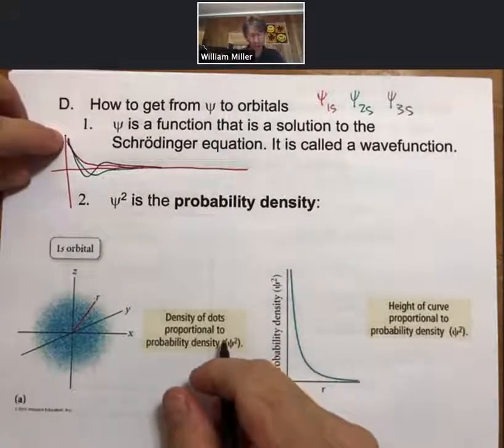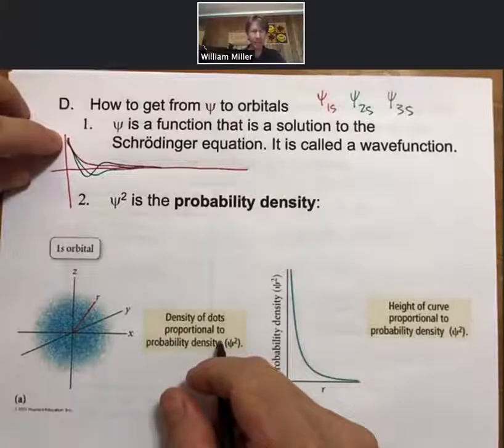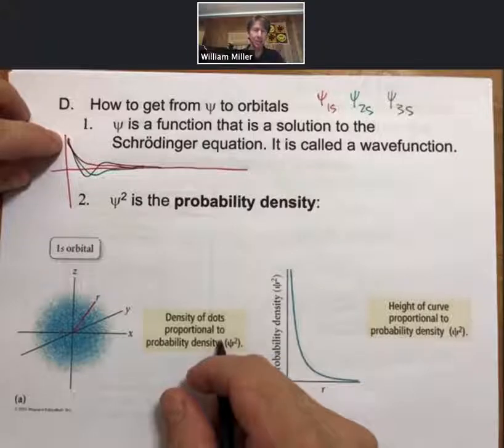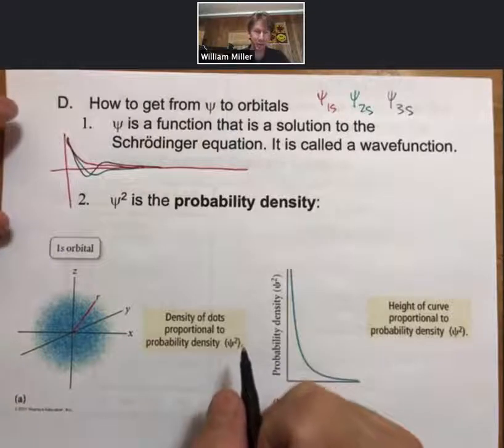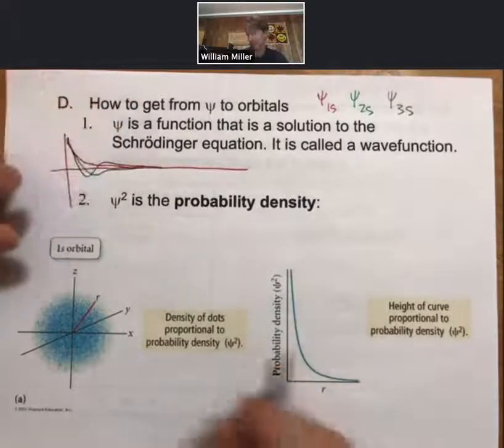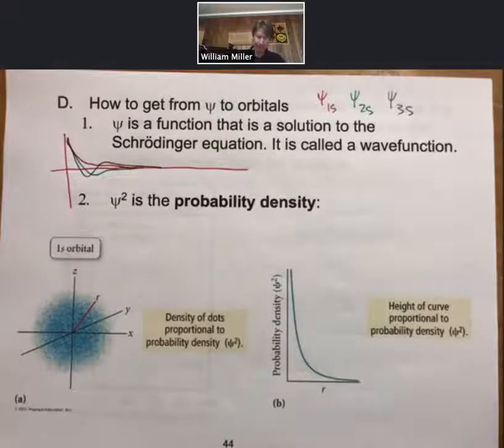The electron is always closest to the nucleus going to have the highest value for psi. And that's because it is attracted to the nucleus. And then it is going to do some sort of waving as it goes away from the nucleus, meaning some sort of sine wave with an exponential decay.